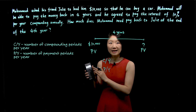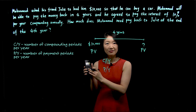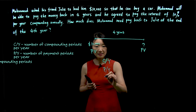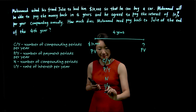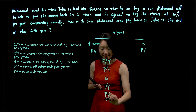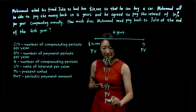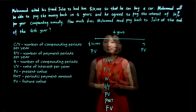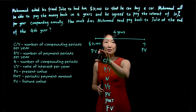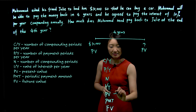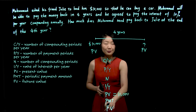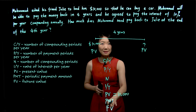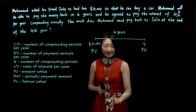We also need to look at the calculator. We need those five buttons on one row: N, IY, PV, PMT, and FV. We have present value, which we already identified as $10,000. Future value — the amount Mohamed will pay back — is unknown.